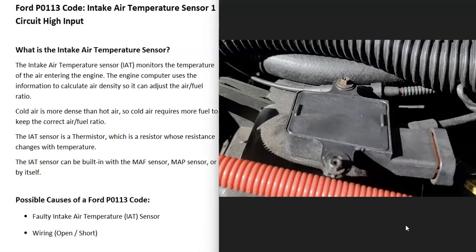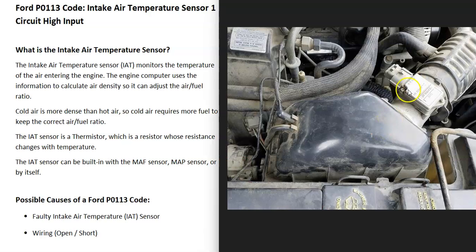And one thing to keep in mind with this sensor is that it can be located differently. It could be located with the MAP Sensor or the Manifold Absolute Pressure Sensor. It could be located with the MAF Sensor, which is the Mass Airflow Sensor. It could even be on its own and just its own sensor. So it's really going to vary.